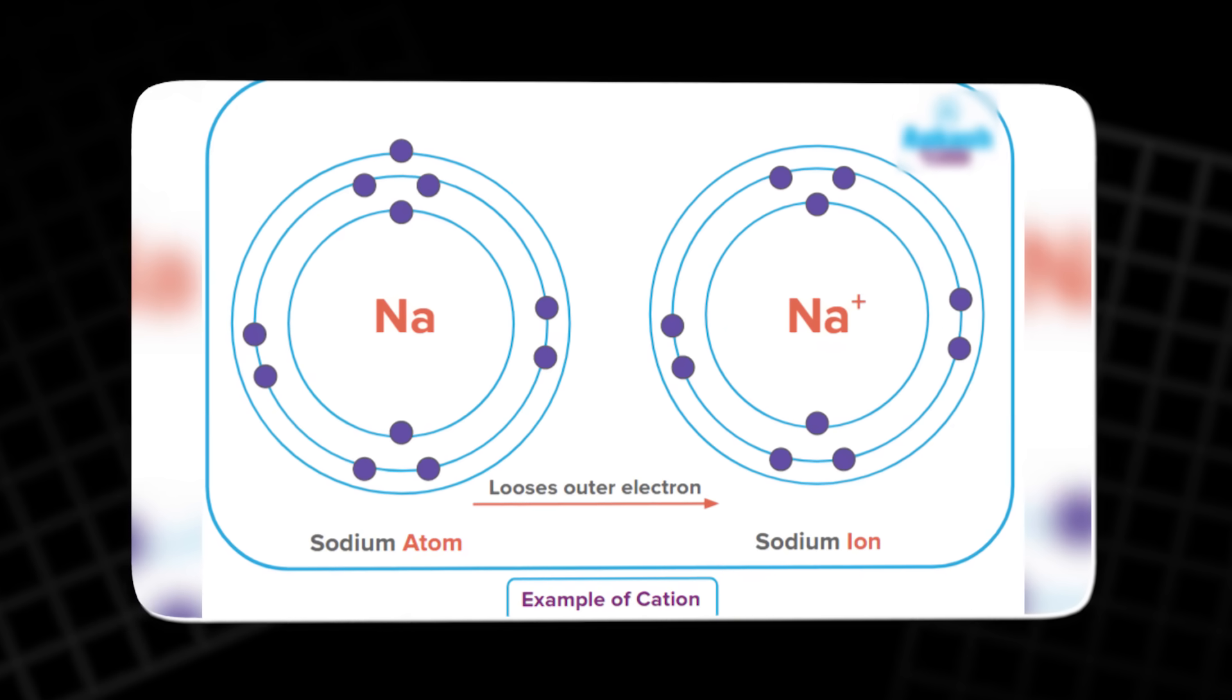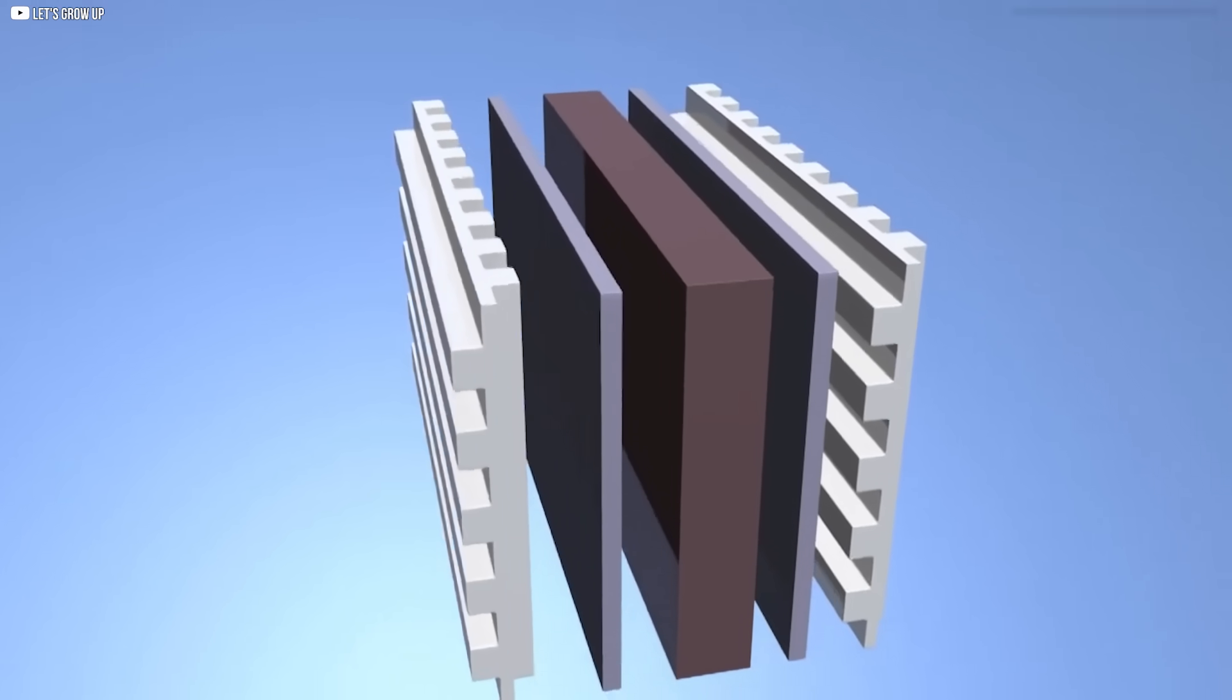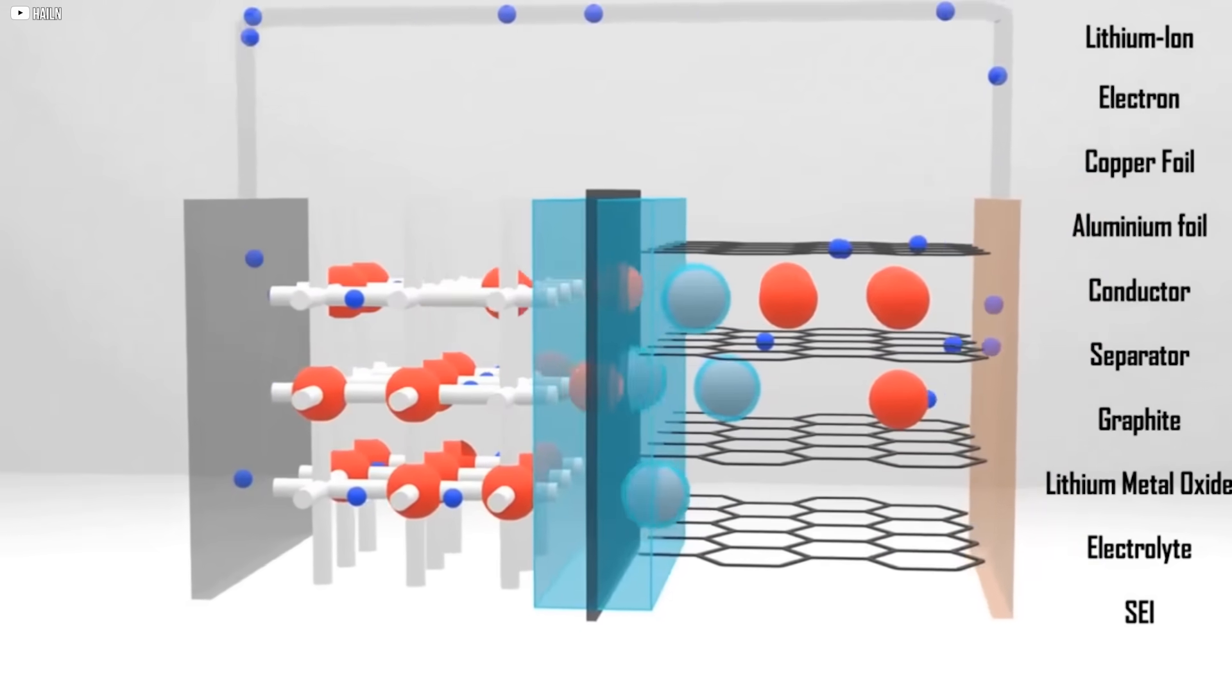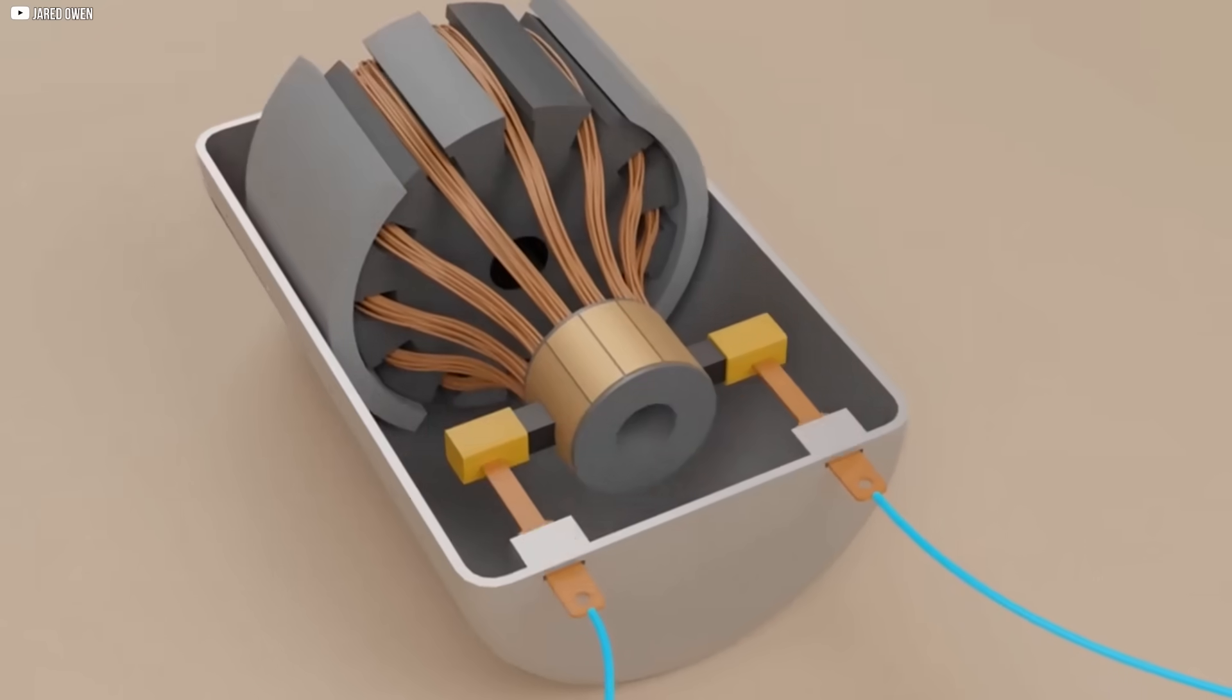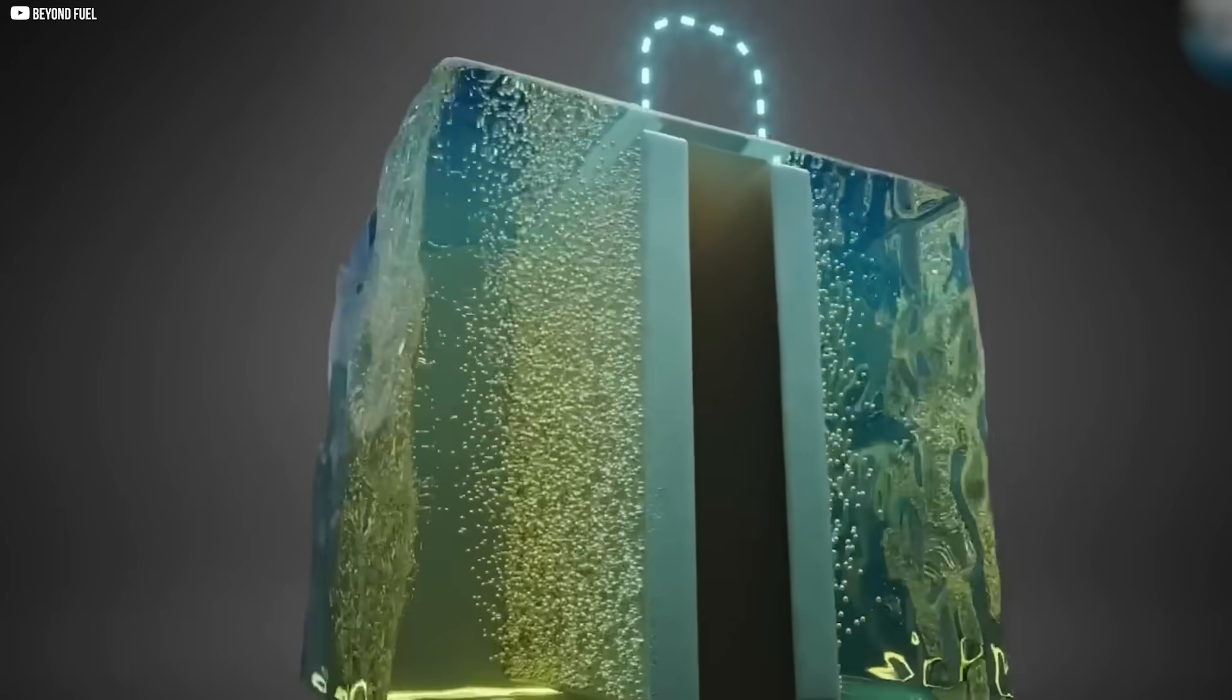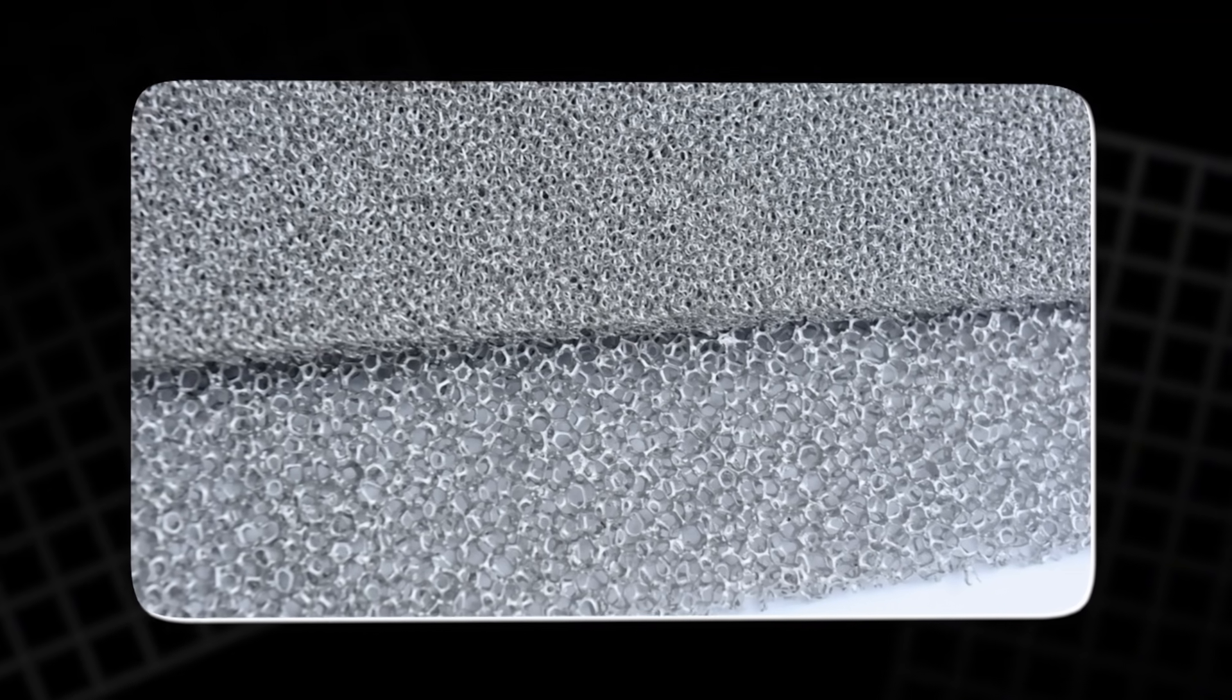As the cell runs, sodium atoms lose electrons and become positively charged ions. These ions move through the middle layer, the solid beta-alumina electrolyte, while the freed electrons travel through an external circuit to power electric motors. After passing through the electrolyte, the sodium ions enter the bottom layer, a nickel foam that's exposed to air.